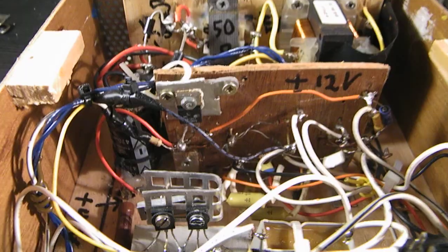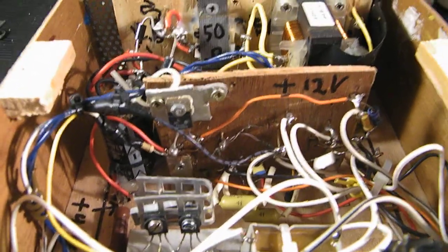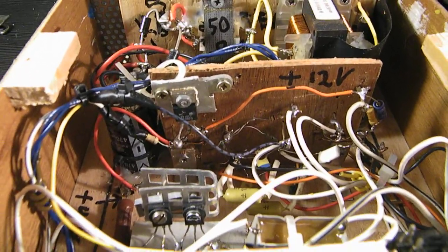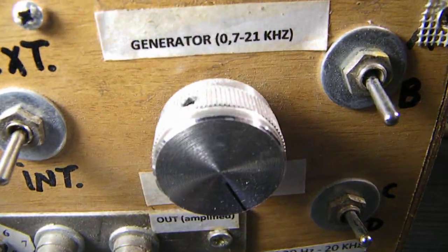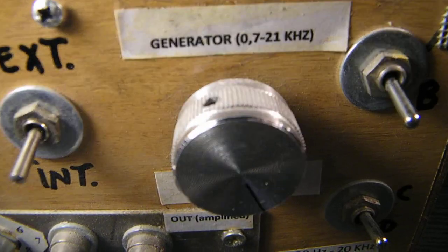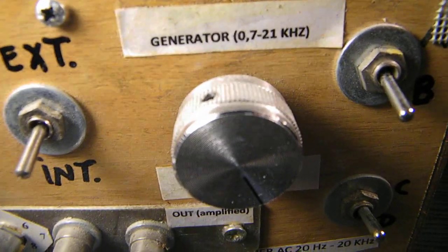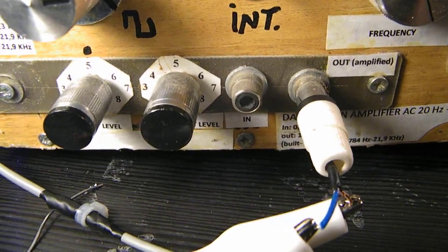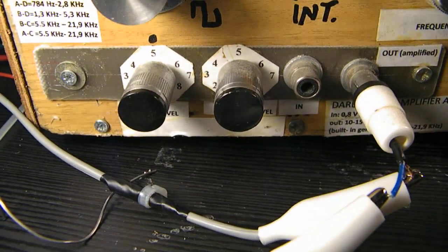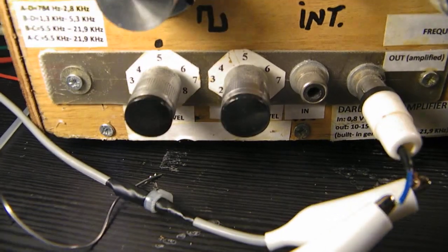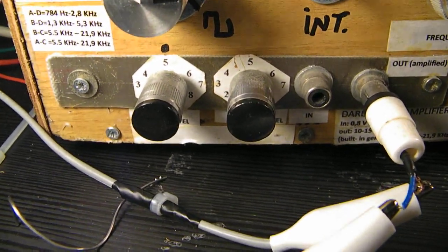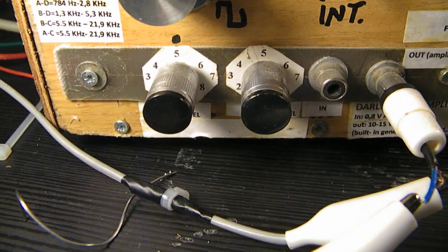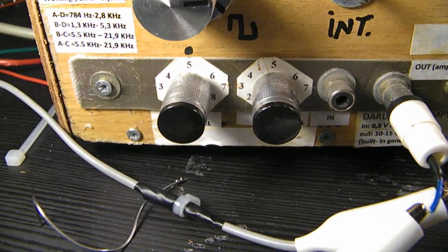This circuit is, by the way, a generator, a square wave generator, combined with that Darlington amplifier. So here you see generator, 700 hertz up to 21 kilohertz input, output, and also the level is important. The level with which the signal from the generator is sent into that Darlington amplifier.